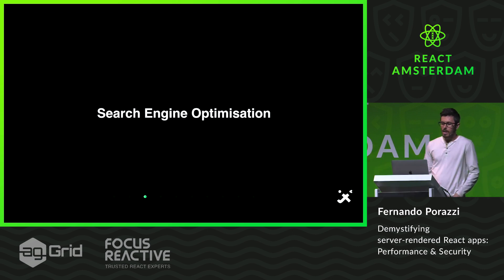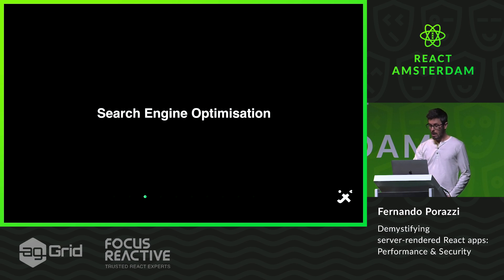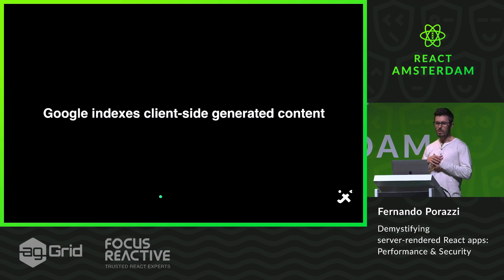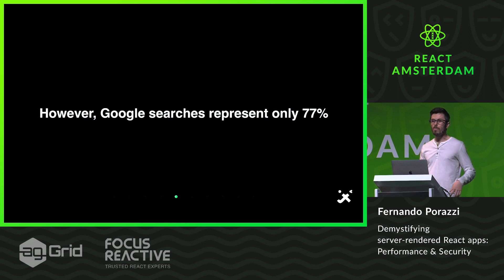Whenever we talk about server-side rendering, the first thing that comes to our mind is search engine optimization. And in fact, this is true, because for many reasons people want their websites to be well-ranked on Google or Bing. One thing that happens on a client-side rendered application is that crawlers are not able to see, to fetch your content — basically, this is what they see: nothing. Although Google is trying really hard to index content generated on the client-side, it's important to take into account that search on Google represents only 77%. So there are 23% of people who might never be able to find your content. You might be leaving money on the table.